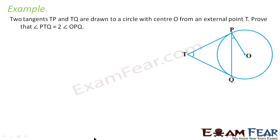The question says: two tangents TP and TQ are drawn to a circle with center O from external point T. We have to prove that angle PTQ is equal to twice of angle OPQ.